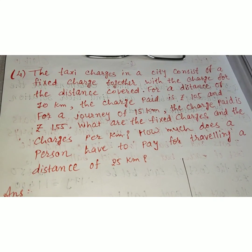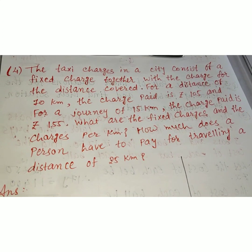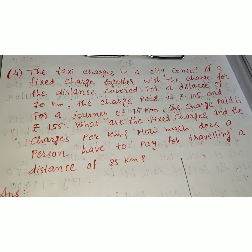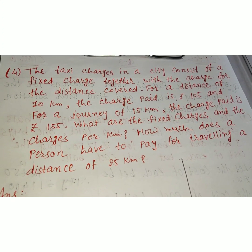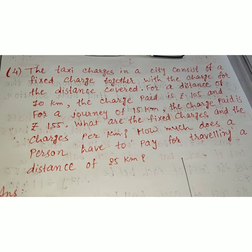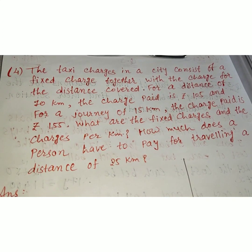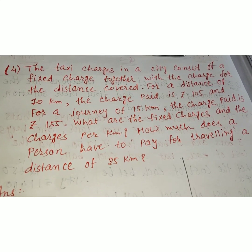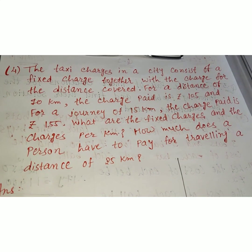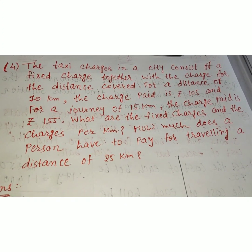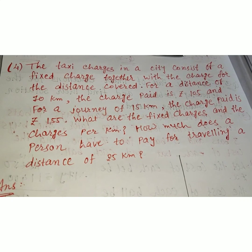Now let's look at sum number 4. The taxi charges in the city consist of a fixed charge together with the charge for the distance covered. For a distance of 10 km the charge paid is Rs. 105, and for a journey of 15 km the charge paid is Rs. 155. What are the fixed charges and the charges per km? How much does a person have to pay for travelling a distance of 25 km?